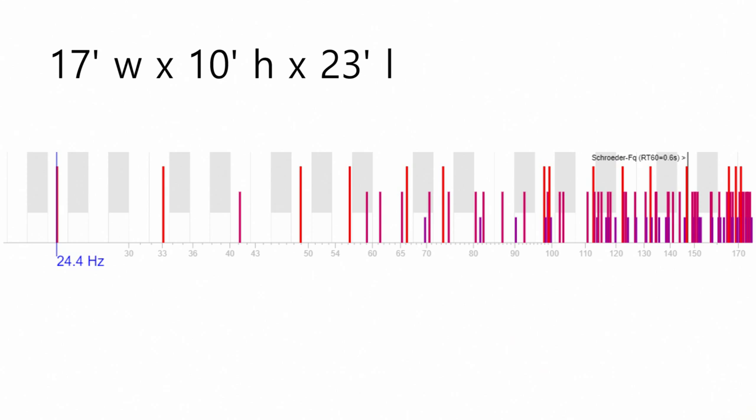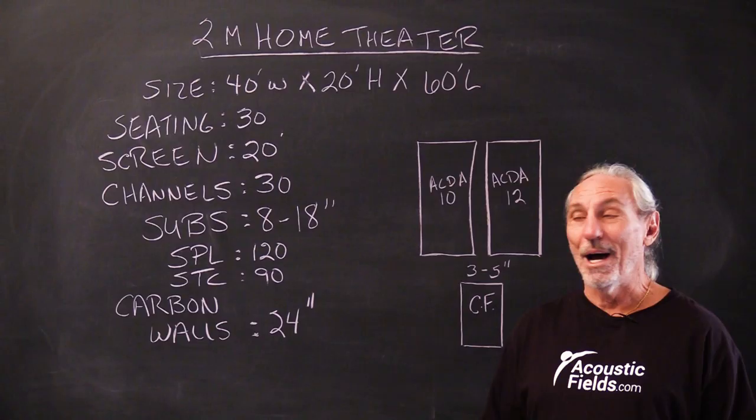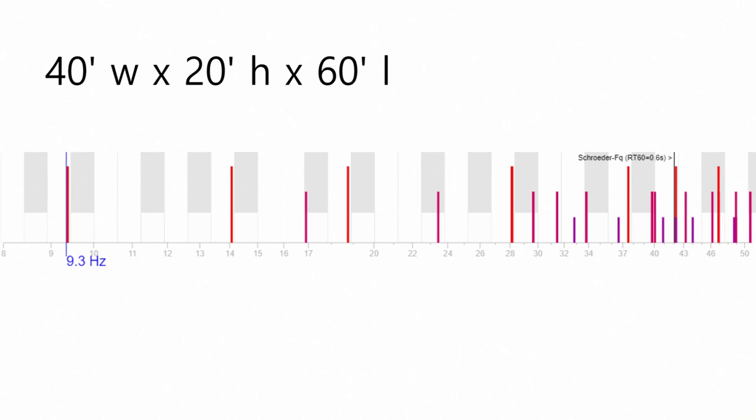You can see the longest are axial, the next longest are tangential, oblique - they're all clustered together. There's so many of them you can't even see between them. Now let's look at the graph of another room that's 40 by 20 by 60. No lines.